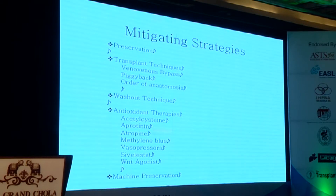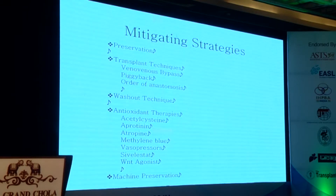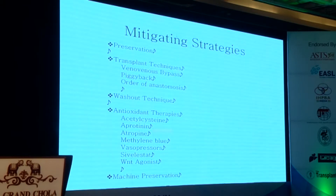Regarding mitigating strategies, we've heard about preservation, and transplant technique is also quite interesting — though there is really no consensus. A survey of European transplant surgeons found no consensus on the order of vascular anastomosis, gradual release of portal venous flow, or flushing the splanchnic circulation. However, using a piggyback technique with conventional anastomosis order may be acceptable, though in patients receiving a steatotic, DCD, or older graft, these technical issues may be more important.